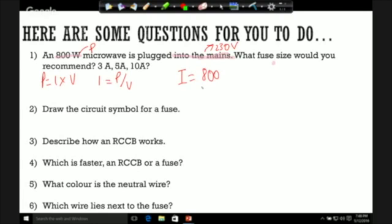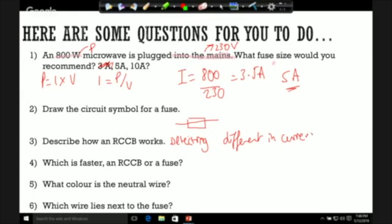So I equals 800 divided by 230, which is 3.5 amps. So we can't use the 3 amp fuse, so we'll have to use the 5 amp fuse instead. Draw the circuit symbol for a fuse - that's a rectangle with a line through it, straight line unlike mine. Describe how an RCCB works - that will be detecting difference in the current between the live and the neutral wires.